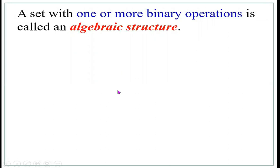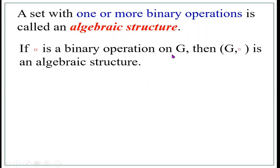A set with one or more binary operations is called an algebraic structure. If circle is a binary operation on G, then the ordered pair G comma circle is an algebraic structure. So the algebraic structure is denoted by an ordered pair in which we first mention the set, then the operation.